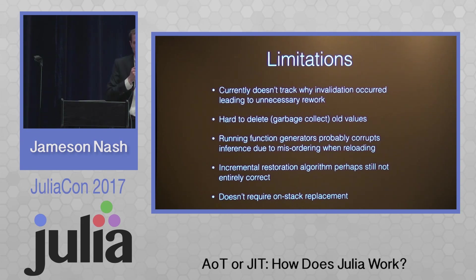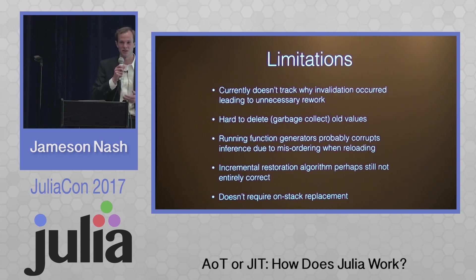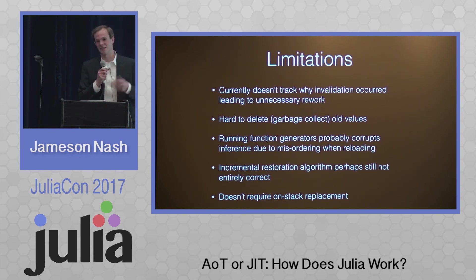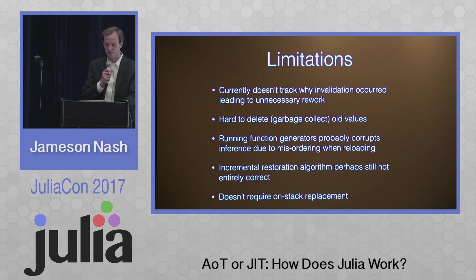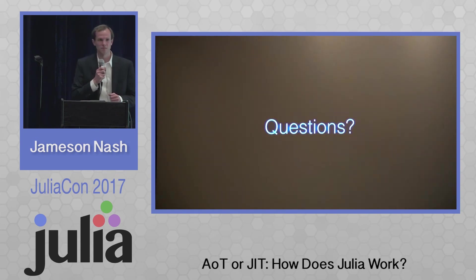Currently there are a few limitations, but it seems to work pretty well. There's a lot of room to make it faster, more accurate, and use less memory. Right now we don't have a good way to garbage collect old values — when inference changes, something gets deleted, and the method's no longer used, but we don't really know it's never going to be used again, so we have to keep it around. And with that, I can take questions. Thank you.